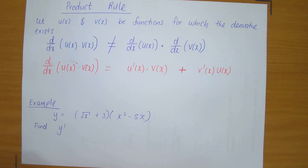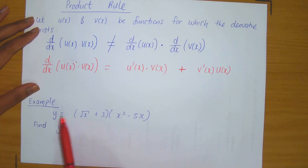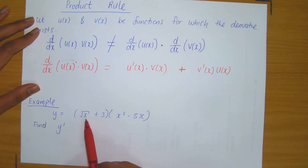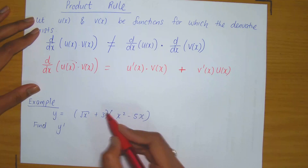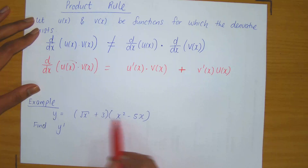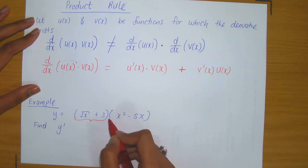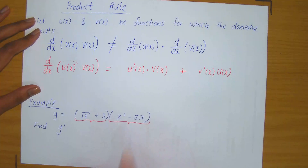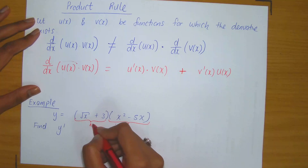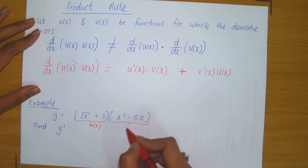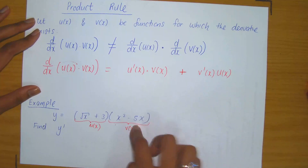Whenever you're given a function which looks like the product of two other functions, this is how you would differentiate it. A simple application: suppose you are given y equals root x plus 3 being multiplied to x squared minus 5x. You immediately observe that this is the product of two things — that which is in the first bracket and that which is in the second bracket. We will refer to root x plus 3 as u of x and x squared minus 5x as v of x, and we will now apply the product rule.